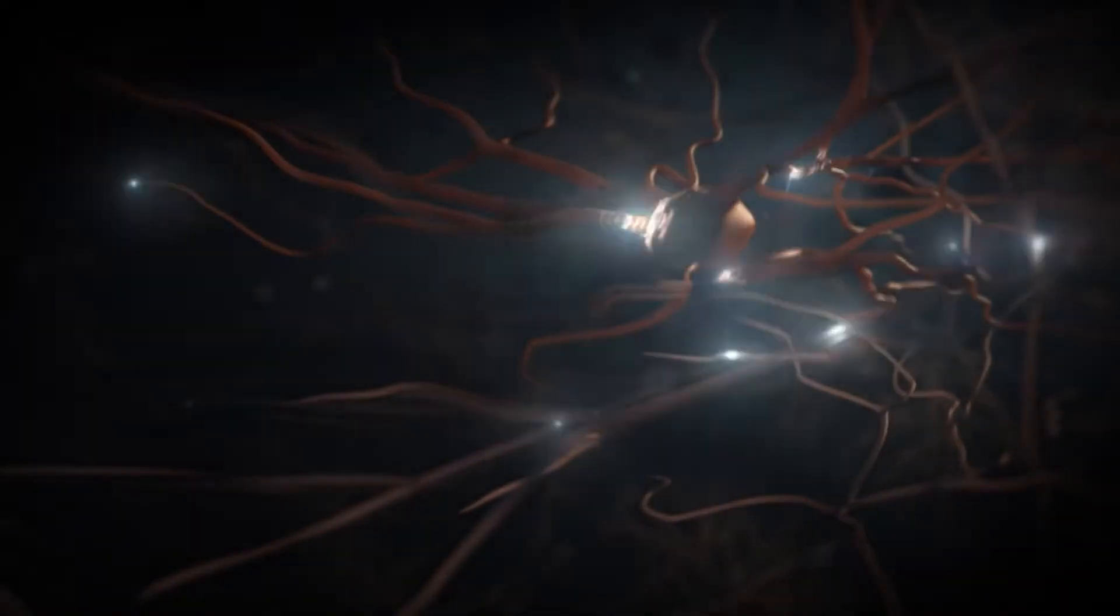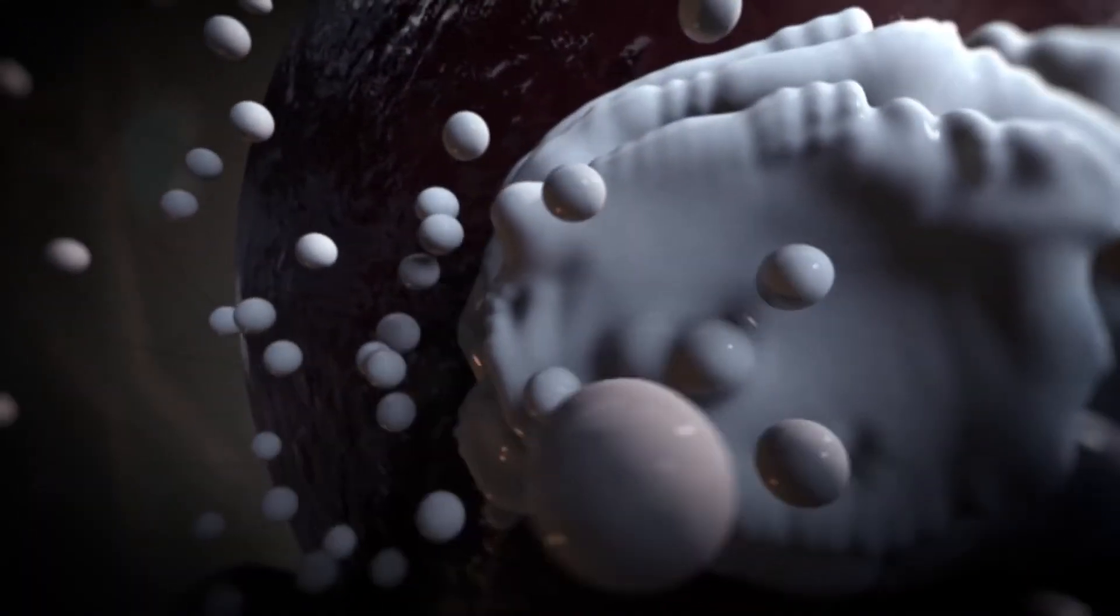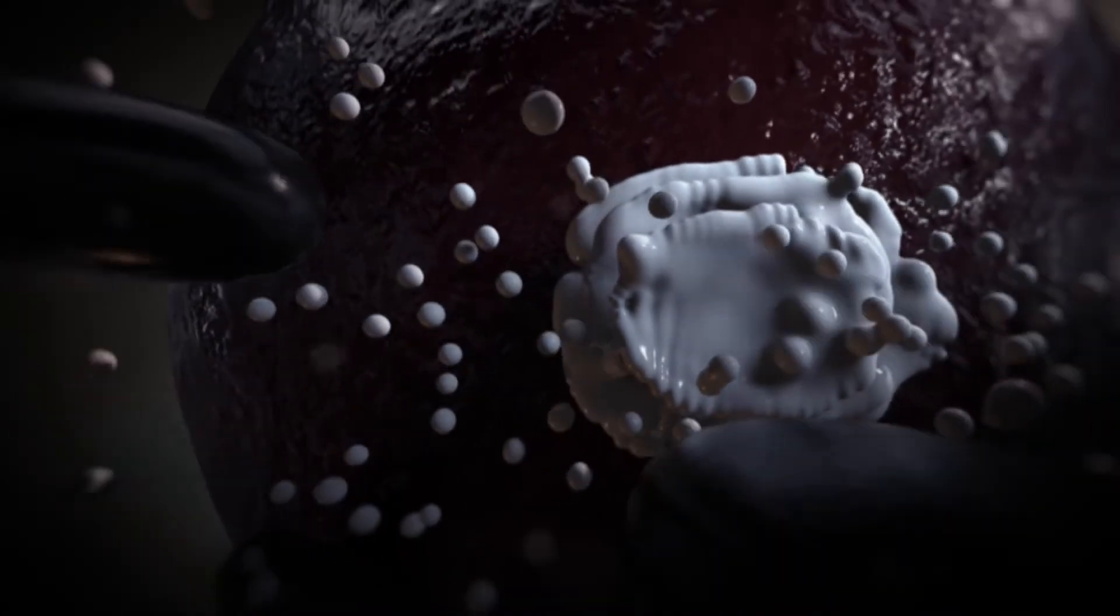But how does a presynaptic cargo, for example, made in the cell body, end up at the right place within the cell? For this, neurons use active transport to sort specific synaptic proteins between the axon and dendrites.